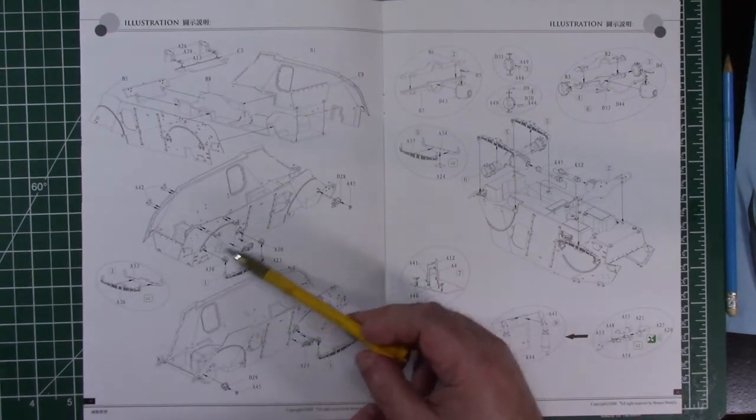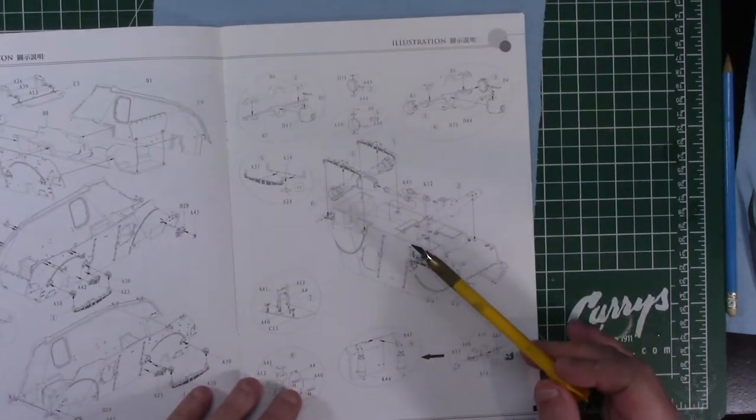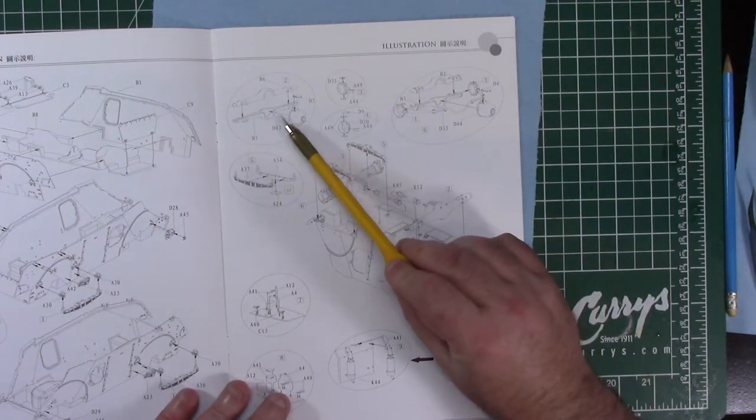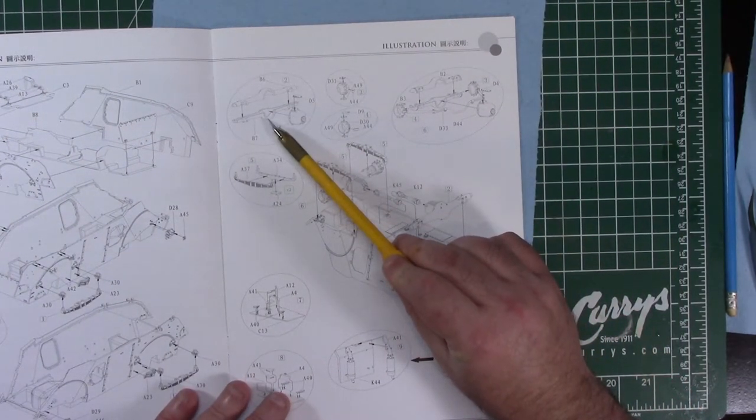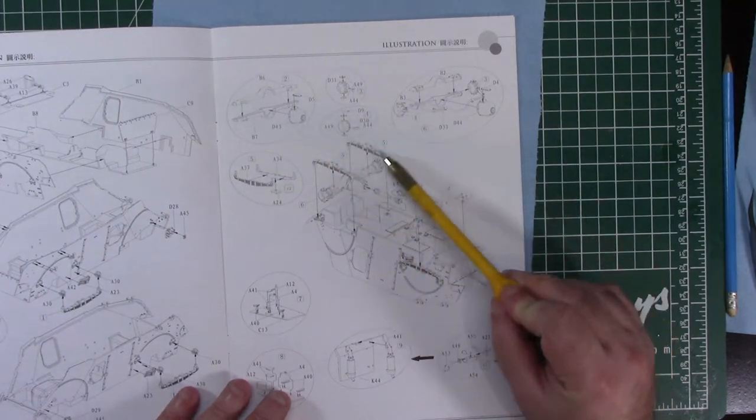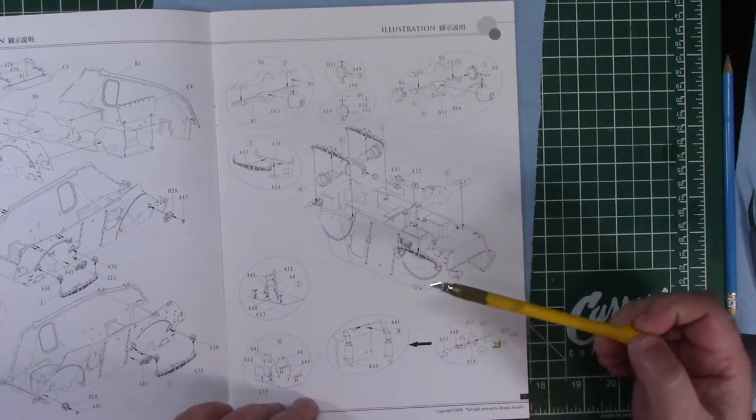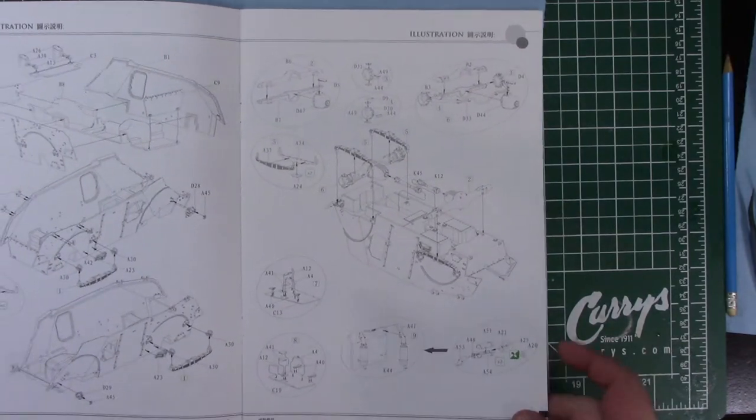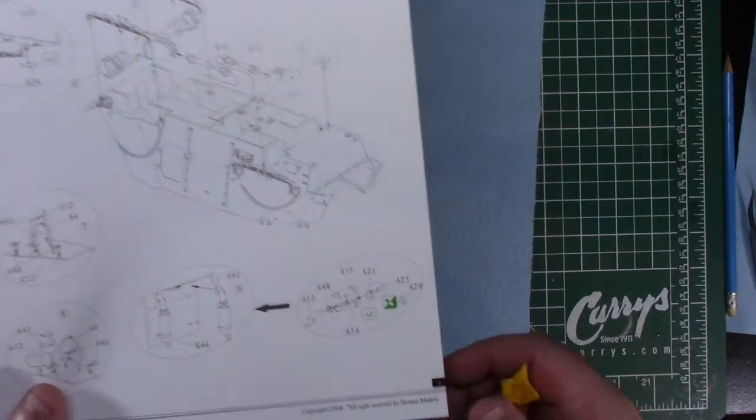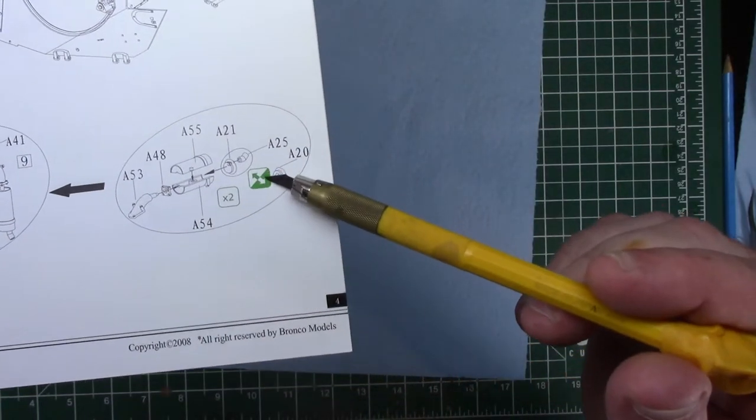You're already adding some of the suspension, and then the axle housings, drive shafts, more suspension. One thing they do on this one is any special instructions they want to draw your eye to, they put in green.